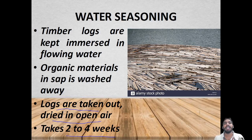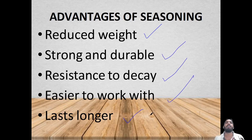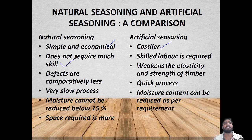The advantages of seasoning include: timber becomes strong and durable, resistant to decay, easier to work with, and lasts longer. Natural seasoning does not require skilled labor, whereas artificial seasoning requires skilled labor. Defects are comparatively less in natural seasoning.